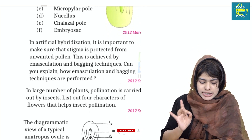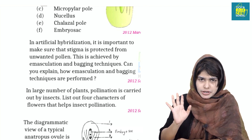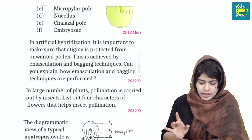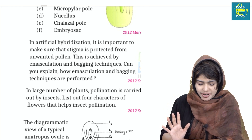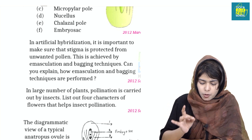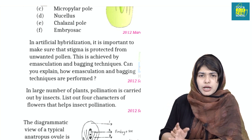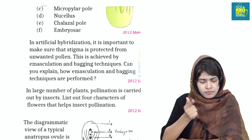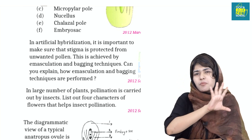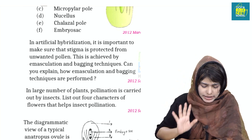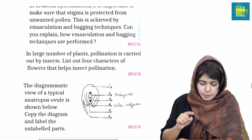It is important to make sure that the stigma is protected from unwanted pollen. This is the emasculation bagging technique. Can you explain how the emasculation bagging technique is performed? Artificial hybridization is important to make sure that the stigma is protected from unwanted pollen.